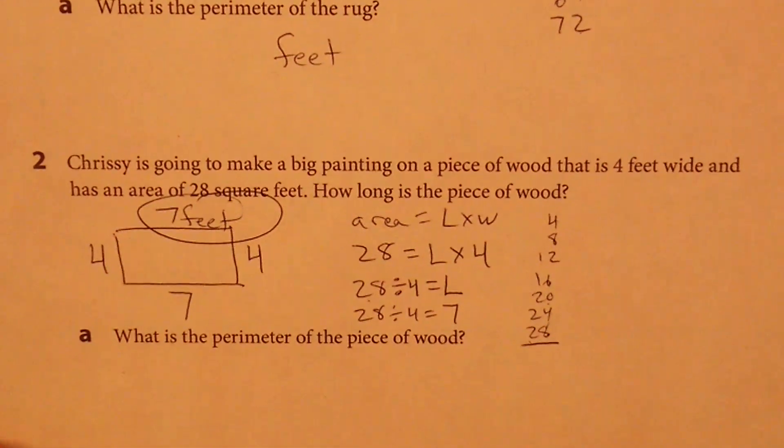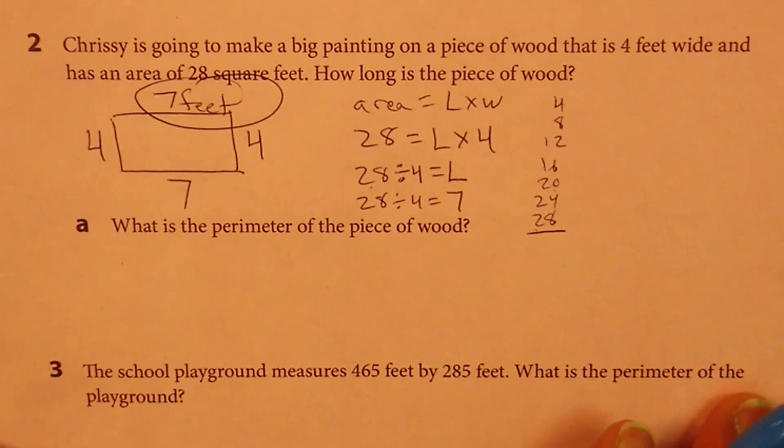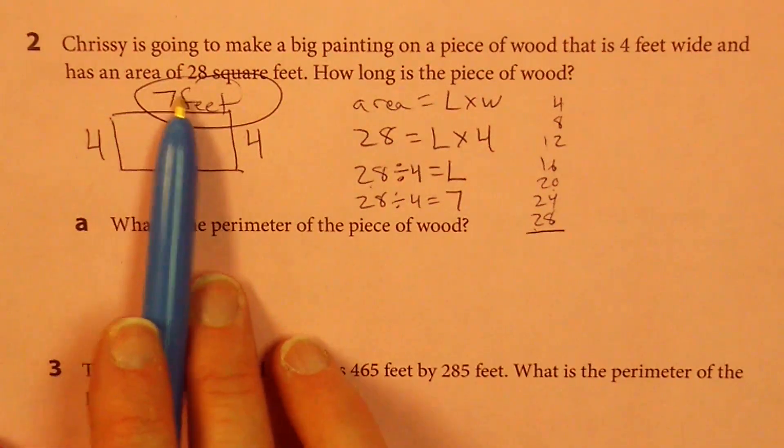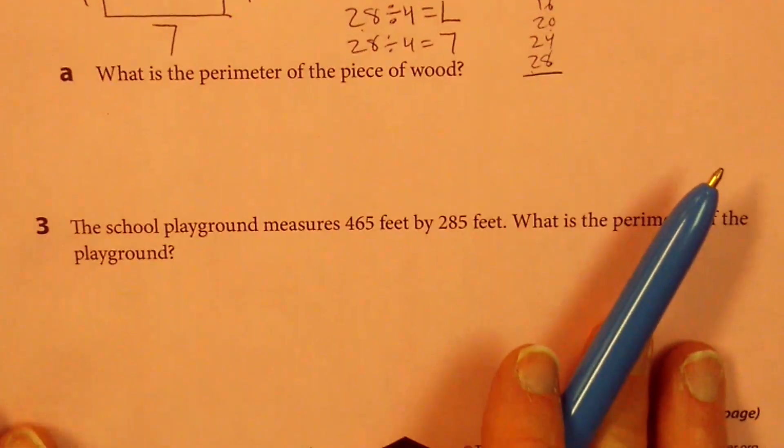And once again, I am going to let you find that perimeter on your own. Perimeter is adding up all of the sides. Distance around.